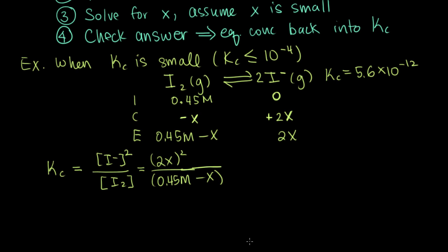Now we can make our approximation. We're assuming x is small, and specifically we're assuming that x is a lot smaller than 0.45 molar. What that means is we can assume that 0.45 molar minus x is approximately equal to 0.45 molar. So x doesn't really change the concentration of I2 at equilibrium very much. This simplifies our expression for Kc quite a lot. We have 4x squared in the numerator from squaring 2 and squaring x, and in the denominator we no longer have x, so this makes a much easier equation to solve. This is all equal to 5.6 times 10 to the minus 12.